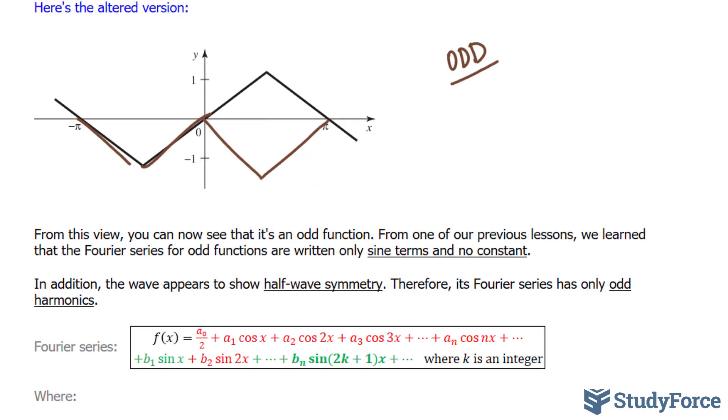Also, the waveform appears to have half-wave symmetry. If we look at the negative half-cycle, say this part, and we pick this point here, half-cycle away would be this point. The y-coordinate here is -1, and the y-coordinate here is 1. They have the same magnitude but opposite signs. So this exhibits half-wave symmetry, and the Fourier series for half-wave symmetry only have odd harmonics.